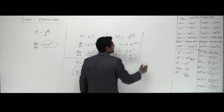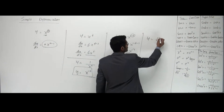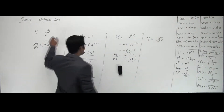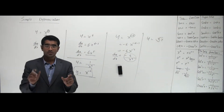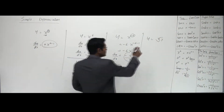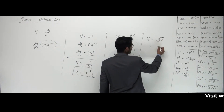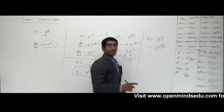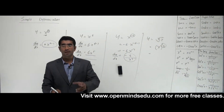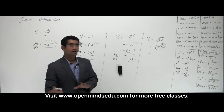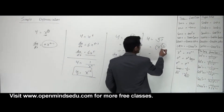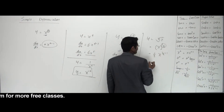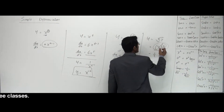Another problem: let's say y is equal to the cube root of x. This is definitely not looking like x to the power n. Can I convert this into that form? Yes — cube root of x can also be written as x to the power 1 by 3. Now n is 1 by 3. n can be a whole number, a negative number, or a fraction — n is any real number. So I can write 1 by 3 into x to the power 1 by 3 minus 1. Now this looks like my standard form.